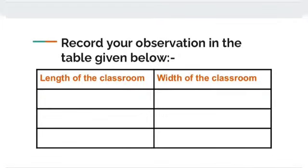After measuring, record your observations in the table given below. You have to write the length and width, or we can say breadth, of the classroom. You have to fill this table yourself, and you have to take observations three times.